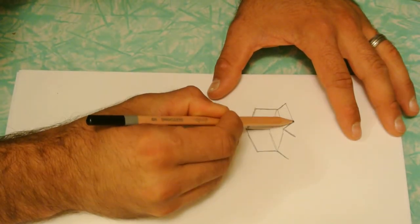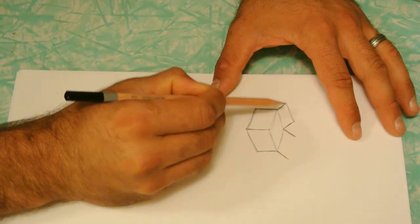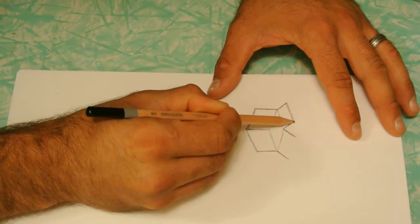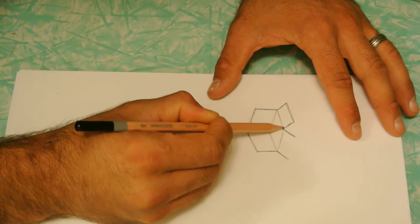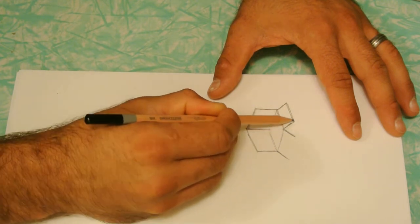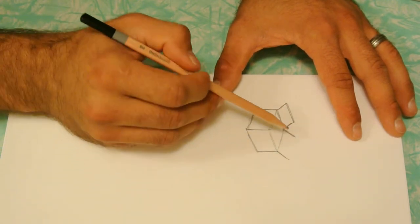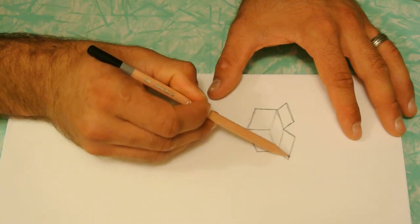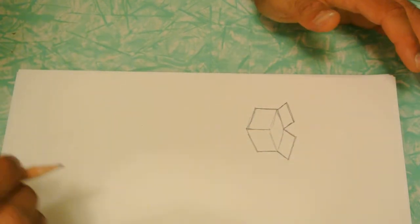Now just draw the top of the box. You want to make sure these lines are the same as this side right here, and same over here. There's the two flaps.